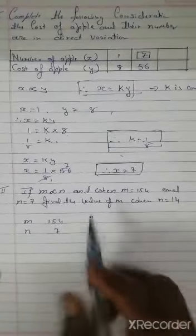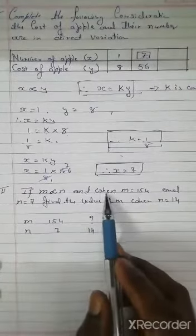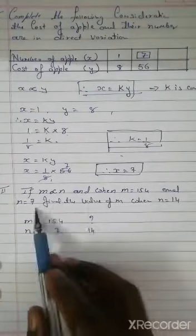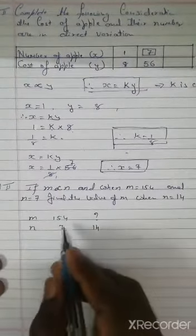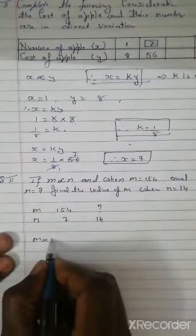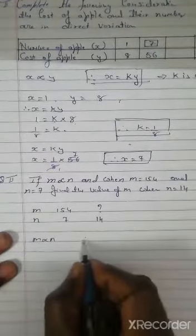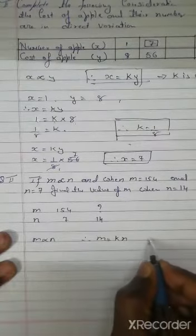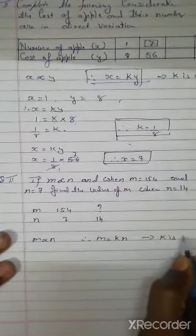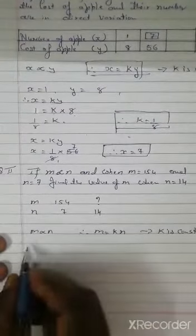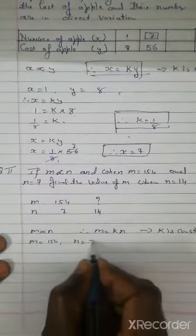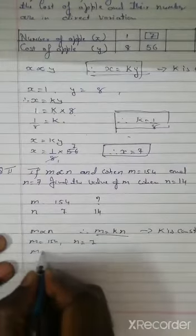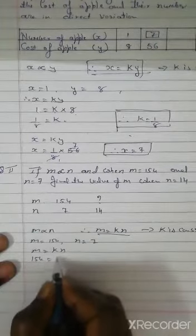Now for the second example: if m varies n, when m equals 154 and n equals 7, find the value of m when n is 14. First, since it is direct variation, we write m varies n, therefore m equals kn, where k is constant. Using the given values, 154 equals k multiplied by 7, so 154 divided by 7 equals k.